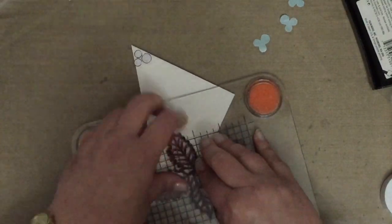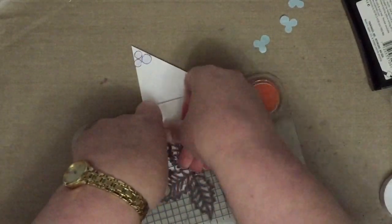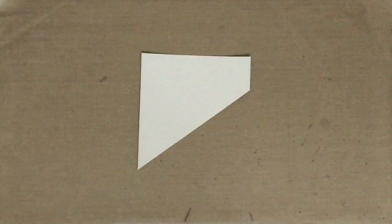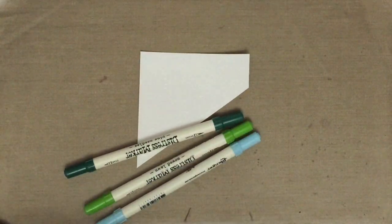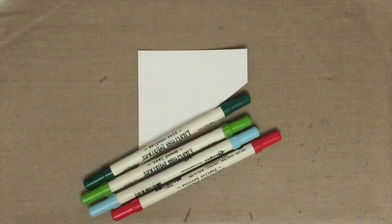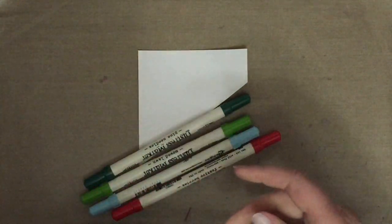All right, so I'm going to cut out the rest of this stamping and masking and embossing. And here the panel is completely embossed. You can't really see it. I've got four different distress inks: these are in pine needles, mowed lawn, tumbled glass, and obviously festive berries.